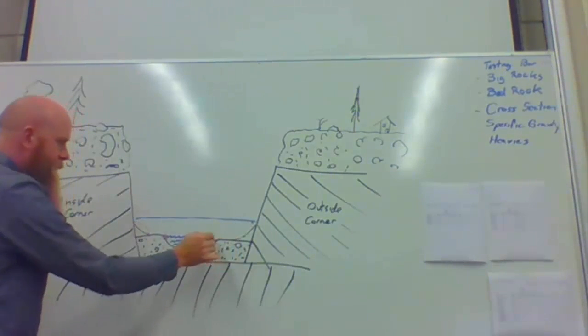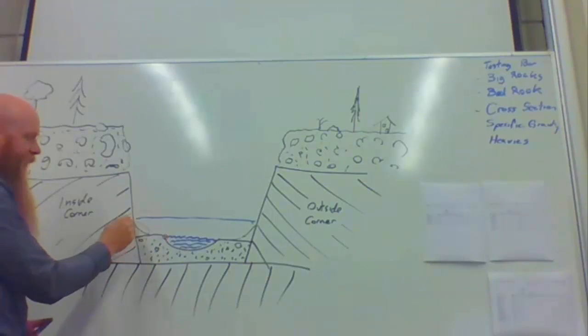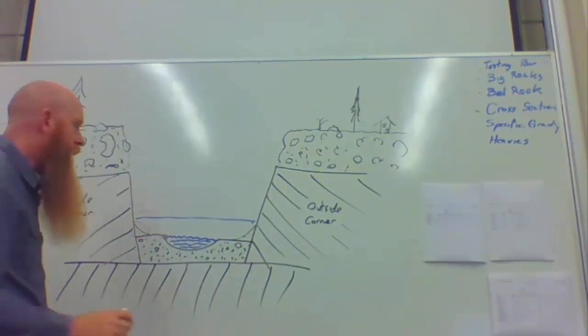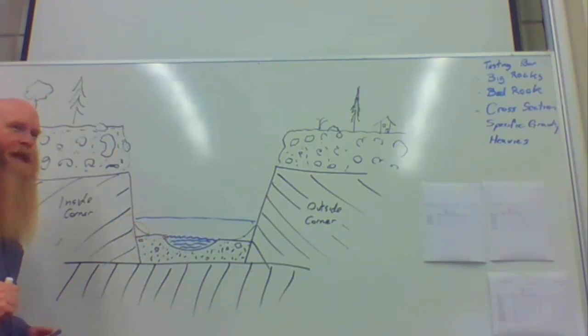You notice these little angles I put in there? I call those slough zones because that's the material falling from above, landing in little piles, and that would be the inside corner where at high water, gold would be depositing on that edge.